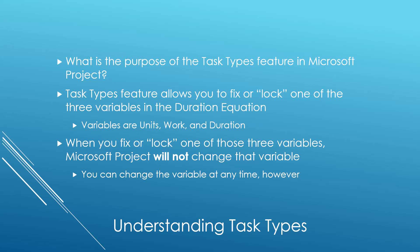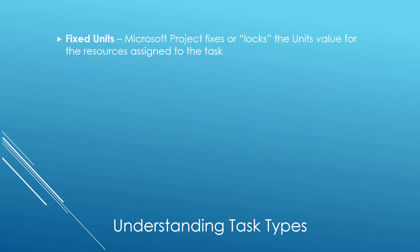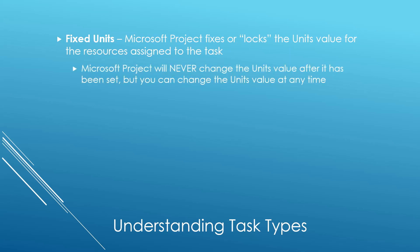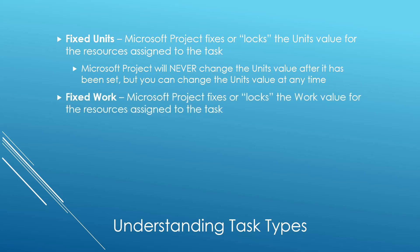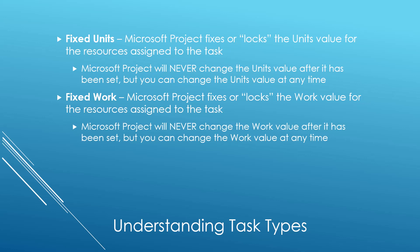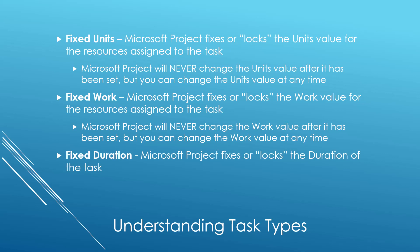You can change that variable at any time because, after all, you are the Project Manager. On a fixed units task, Microsoft Project fixes or locks the units value for the resources assigned to the task. Microsoft Project will never change the units value after it has been set initially, but you can change the units value at any time. On a fixed work task, Microsoft Project fixes or locks the work value. Microsoft Project will never change the work value after it has been set initially, but you can change the work value at any time.